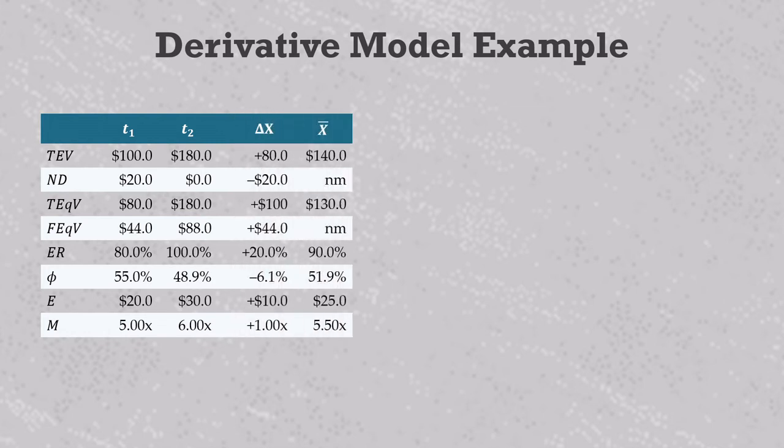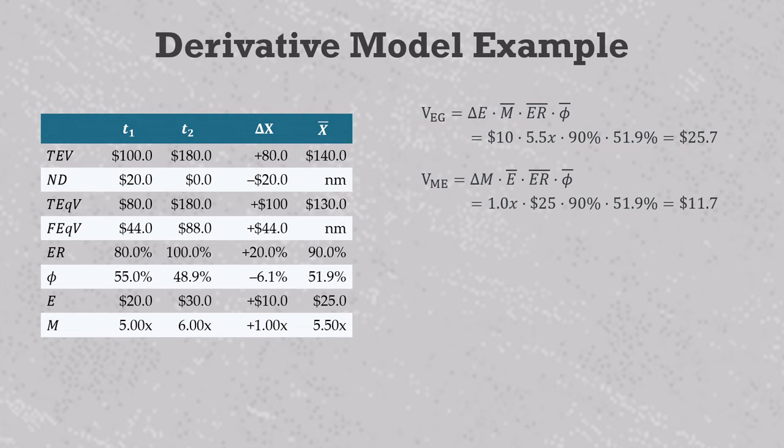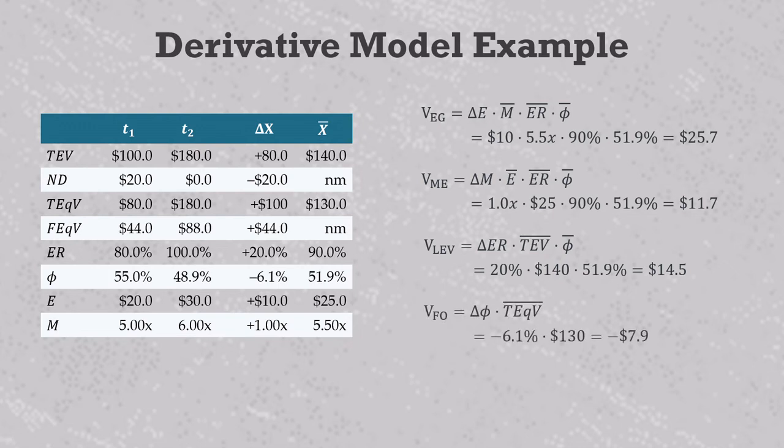We see that EBITDA grows by 10 million, which we expect to be a positive driver of value, and that's what happens here with 25.7 million of value creation. The 1x increase in valuation multiple has the same function. It leads to 11.7 million of additional value. The equity ratio increase of 20% provides 14.5 million of value creation. And finally, the decrease in GP ownership percentage gives us a negative delta phi, and this provides a fund ownership impact of negative 7.9 million.